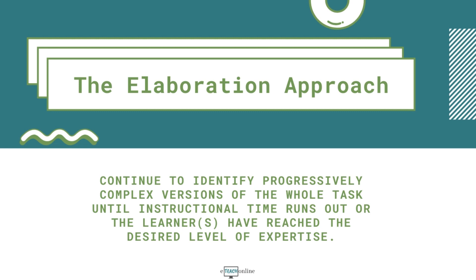After identifying the simplest epitome of the whole task, work with the subject matter expert to identify the next simplest version that is more representative of the goal. In general, the next more complex version will require learners to address additional variables and more difficult conditions. Continue to identify progressively complex versions of the whole task until instructional time runs out or the learners have reached the desired level of expertise. A question that may arise is how large should a step be, or how much should be included in one step? In general, if instruction is intended for young students, each step should be rather small, while an instructional goal for older students may be broken down into larger steps. It's recommended that you identify between 5 to 15 steps to achieve your goal.